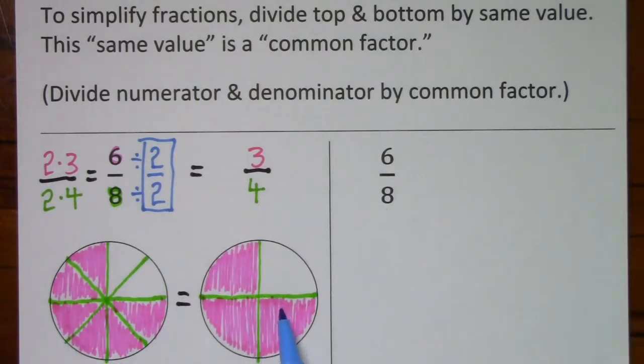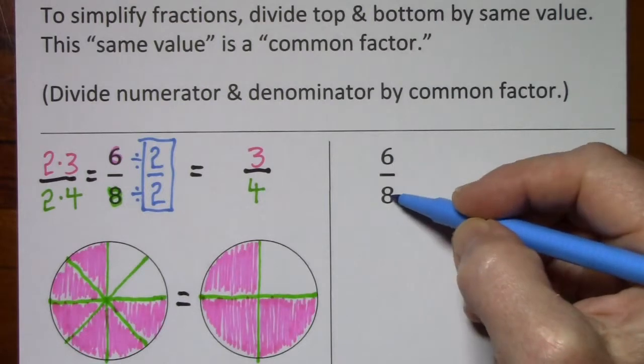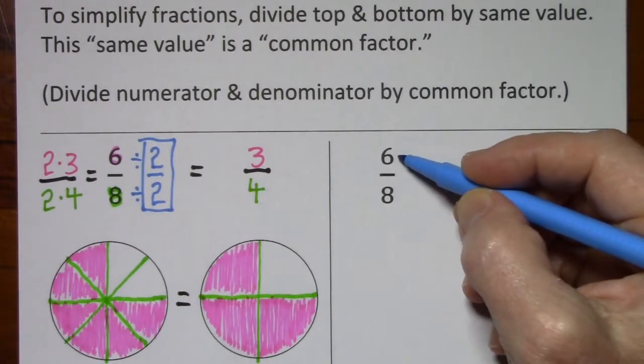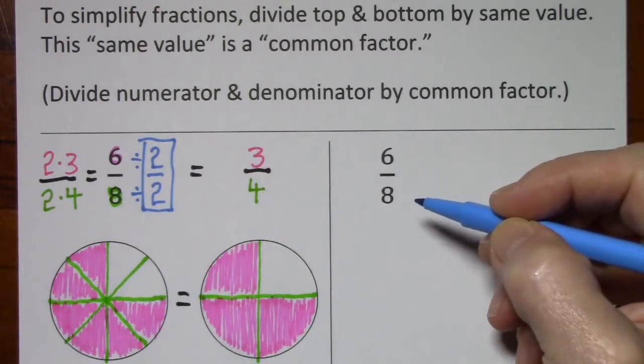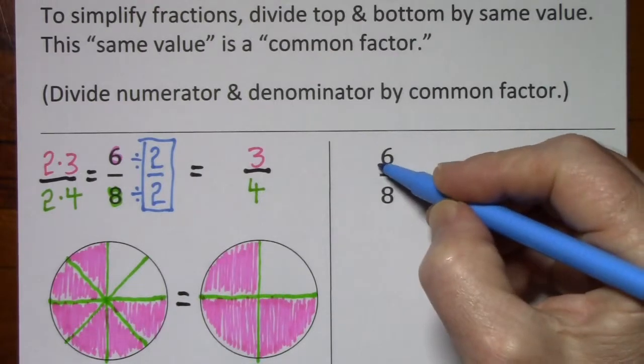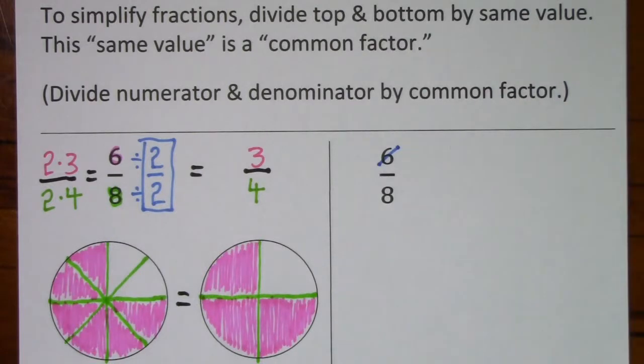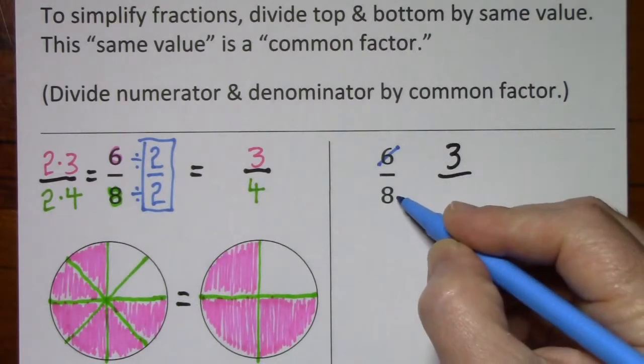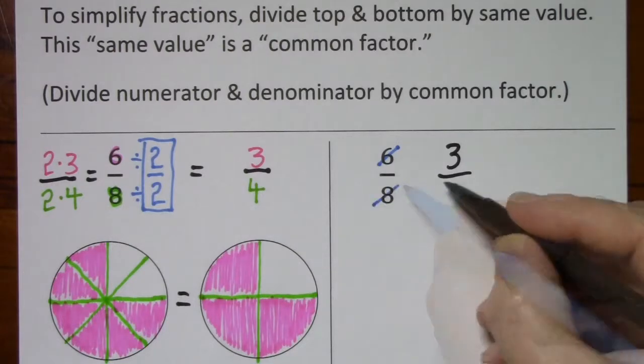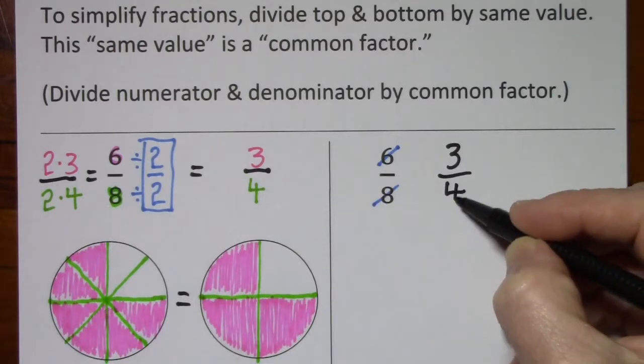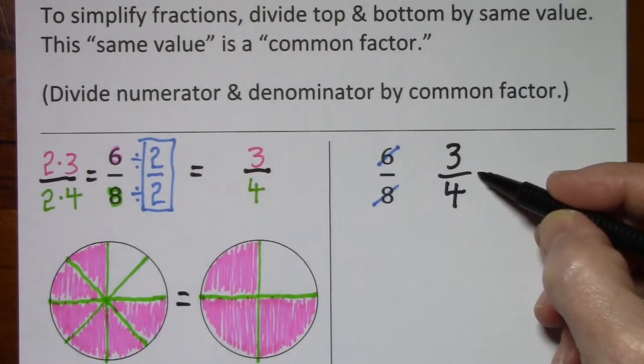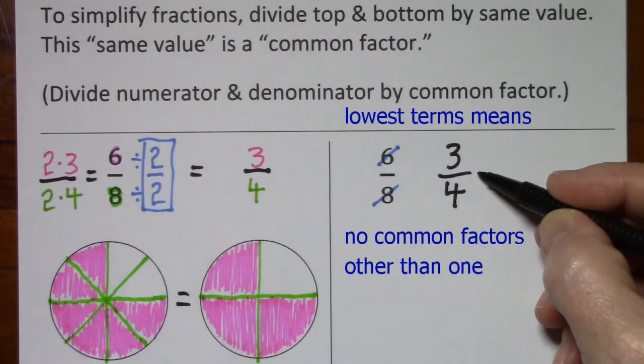Now this is certainly a lot of writing. Normally what you'll do is you'll look at the fraction, say 6 eighths. You'll think of what divides evenly into 6 and 8: 2. Divide by 2 leaves you with 3, divide by 2 leaves you with 4, and here's the simplified form. We can also say this is written in lowest terms.